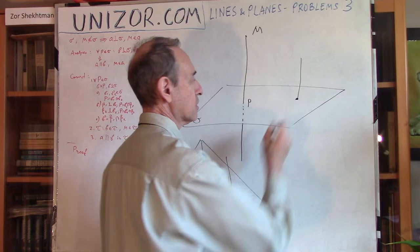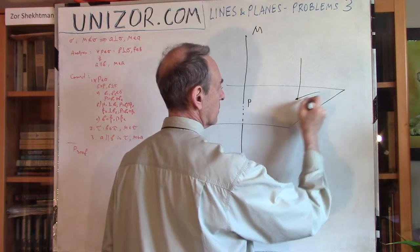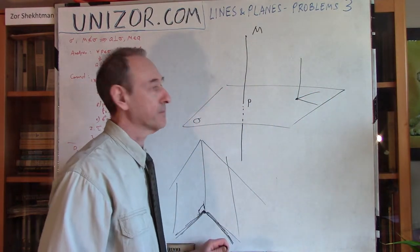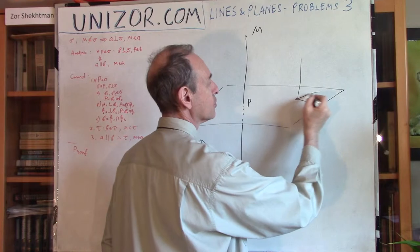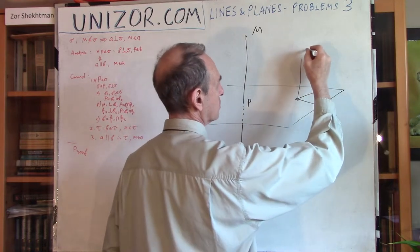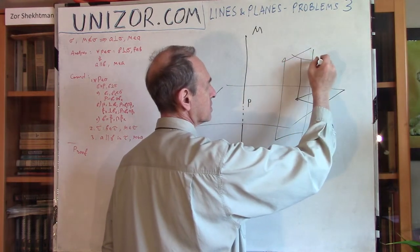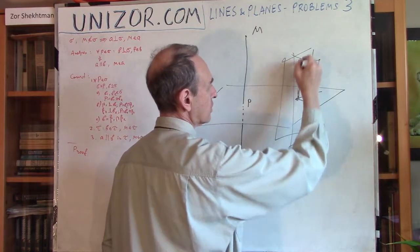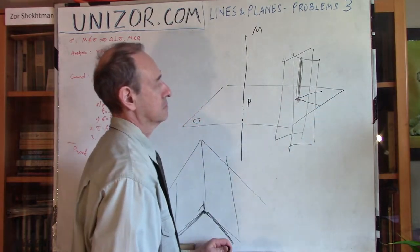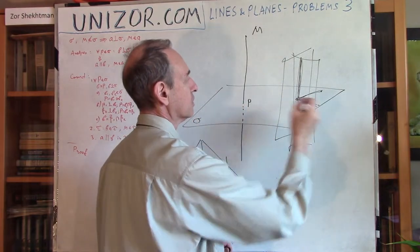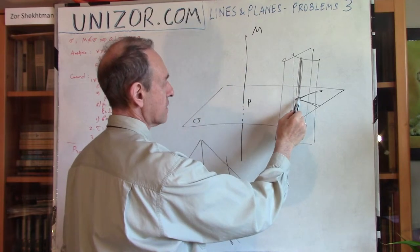Does it help us here? It does, because when we pick any point, we have any two lines on plane sigma. At that point we build a plane perpendicular to one line, and a plane perpendicular to the other line. The intersection of these two planes will obviously be perpendicular to both lines. Since it is perpendicular to two lines in the plane, it is perpendicular to the entire plane. So this problem reduces to that one, and that one reduces to the simplest known construction.